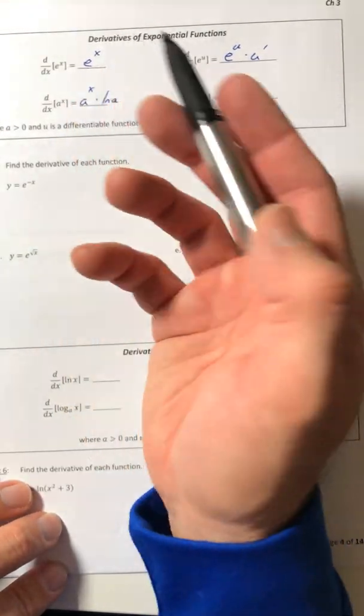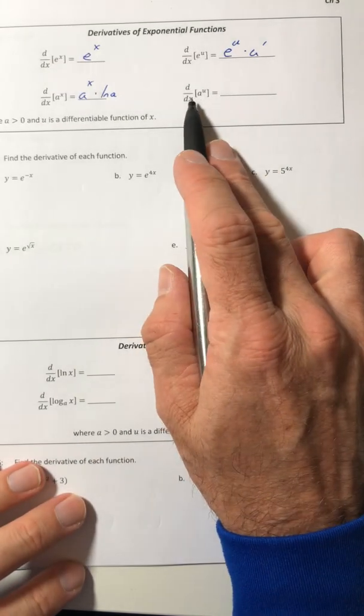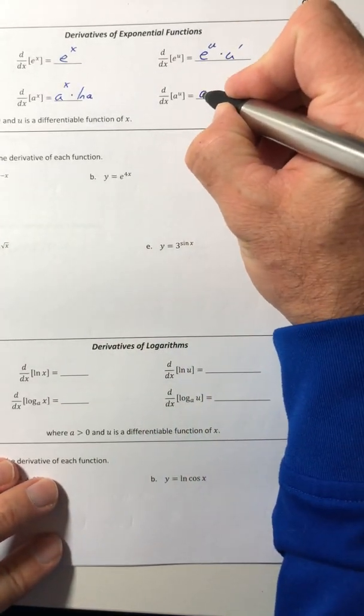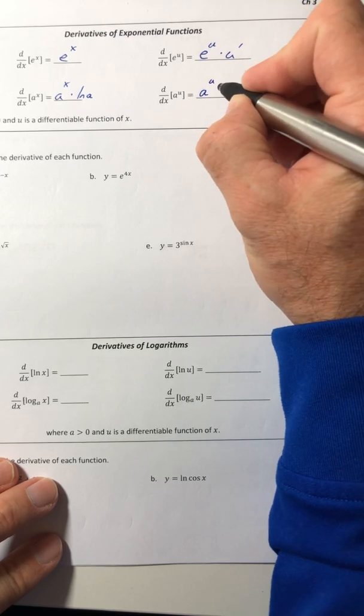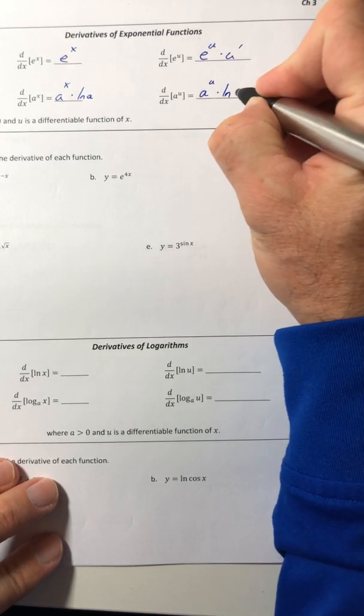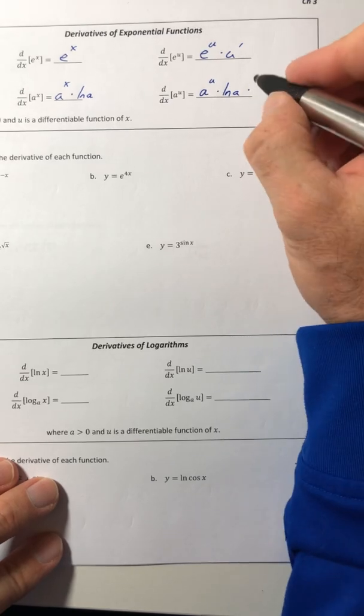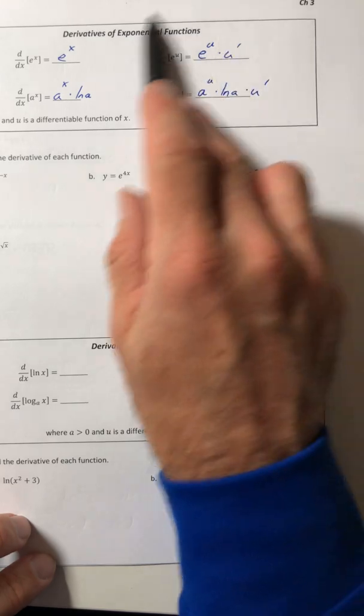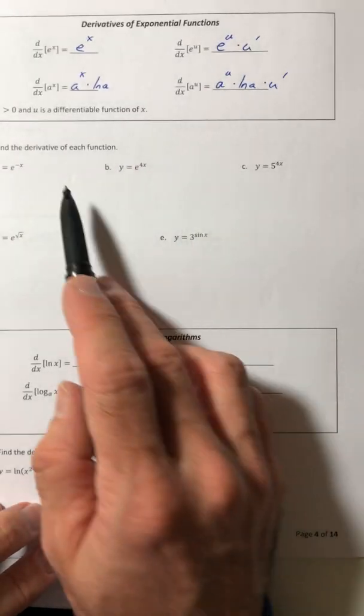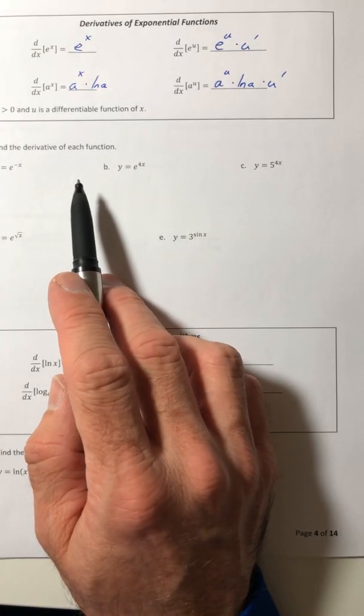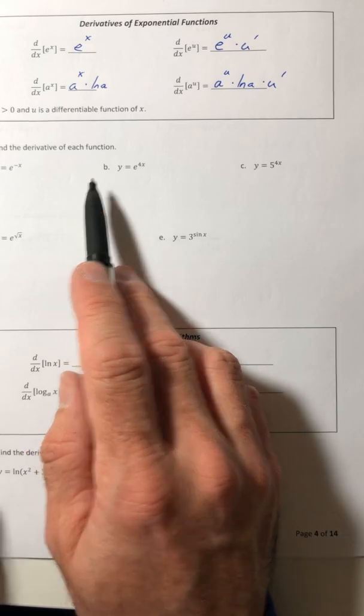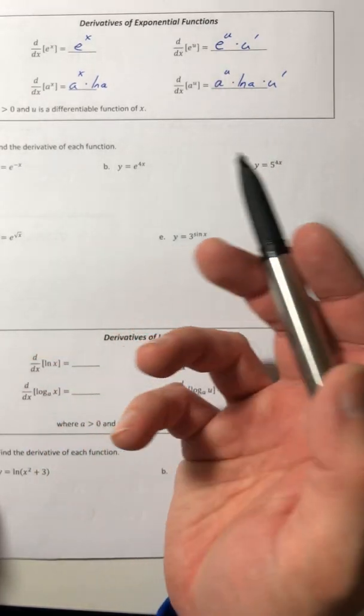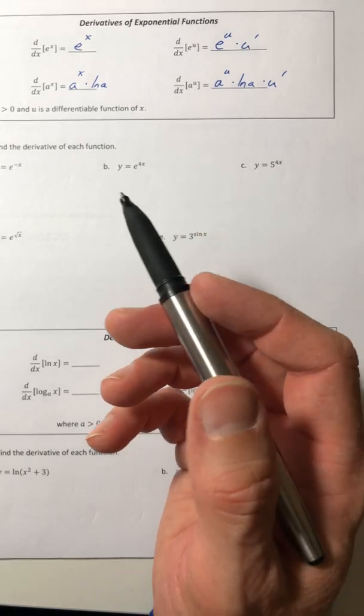Now if it's a to the u, just recopy the function, so a to the u times ln of a, but then multiply by the derivative of your exponent. And this will work every single time you do it, as opposed to like going 'oh gosh now I got to use the chain rule, how does that work?' Exponential functions are a lot easier to work with than they appear possible.